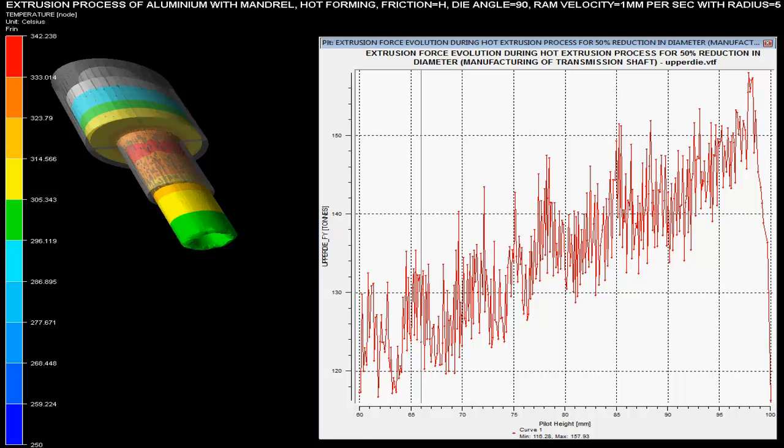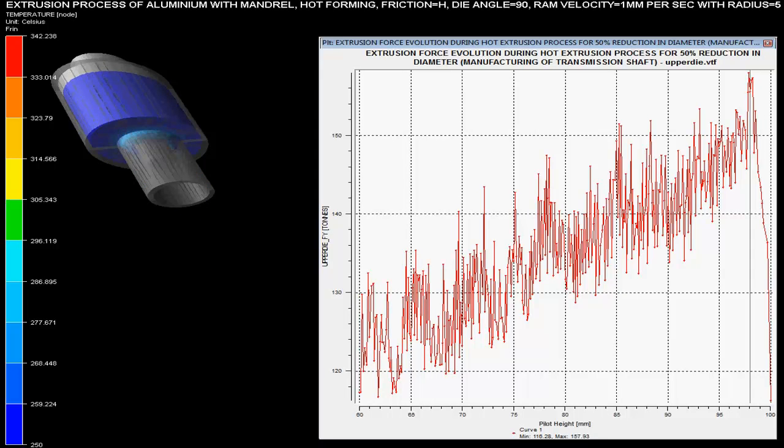Extrusion forces with respect to billet height are shown on the graph. These forces are maximum when there is a sudden change in the cross-sectional area of the billet. As the billet height reduces, the force required for extrusion of the pipe increases.